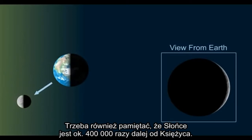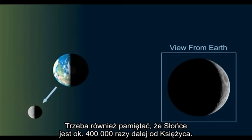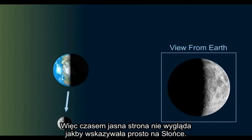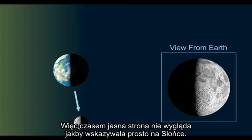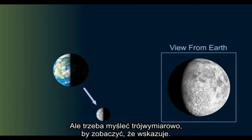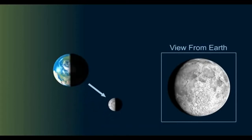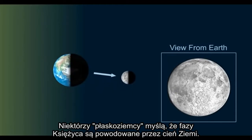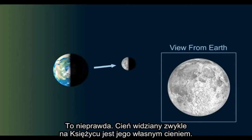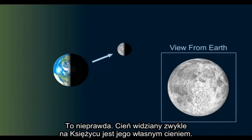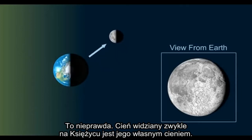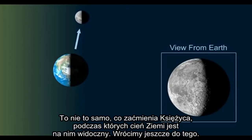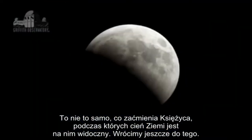It's important to remember that the sun is about 400 times farther away than the moon, so sometimes the lighted side doesn't look like it points directly to the sun, but you have to think three-dimensionally to see that it does. Some flat earthers think the phases of the moon are supposed to be caused by the earth's shadow — that is wrong. The shadow we normally see on the moon is just the moon's own shadow, the side away from the sun. This is very different from lunar eclipses, when the earth's shadow is seen on the moon.